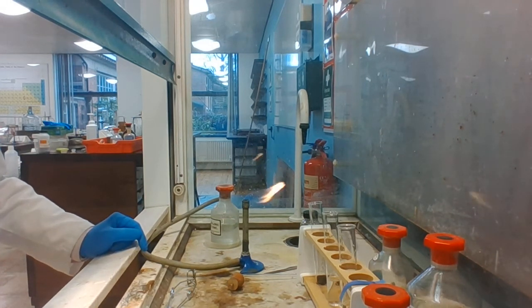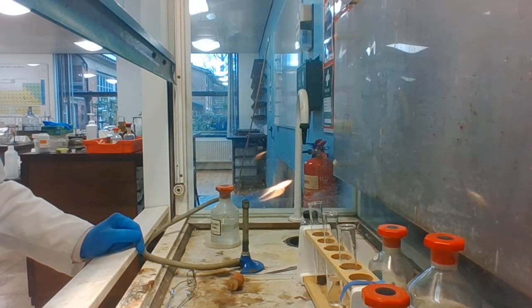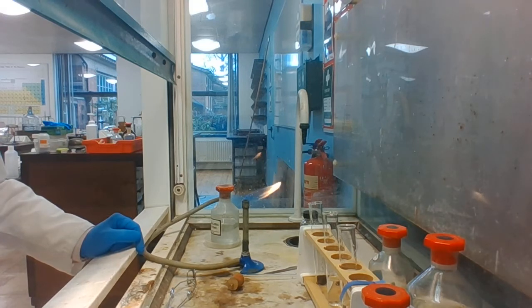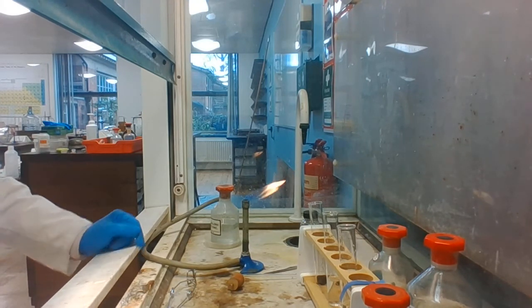In this clip, I'm going to try and demonstrate the displacement of a less reactive halogen by a more reactive halogen. I'm going to generate chlorine gas by reacting hydrochloric acid with manganese dioxide. Then I'm going to bubble the chlorine gas through potassium bromide solution and potassium iodide solution.